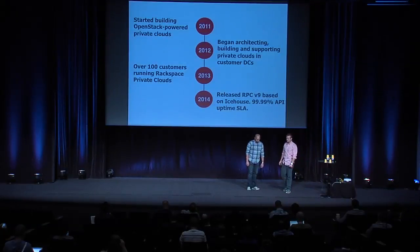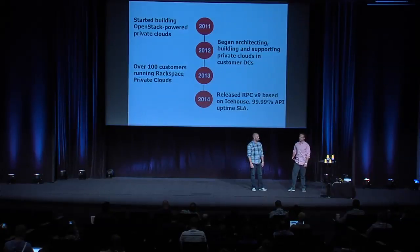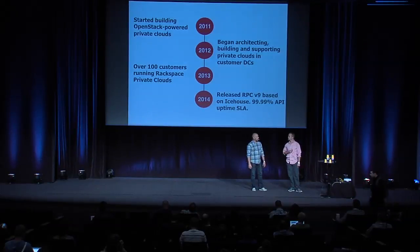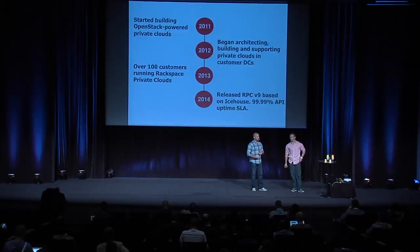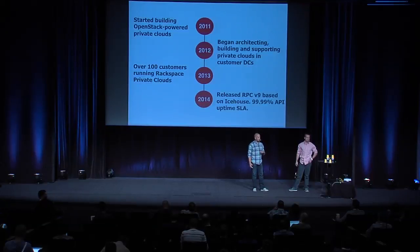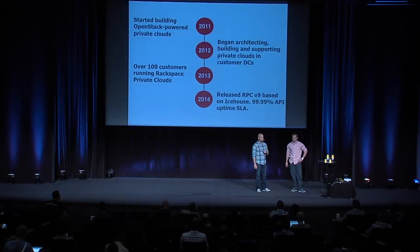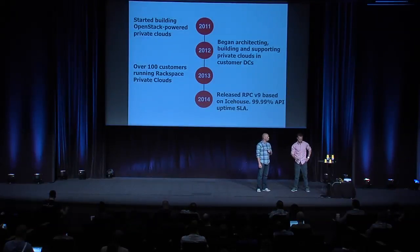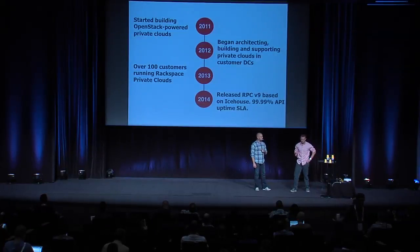Rackspace started building private clouds in 2011 using Nova Network. The first release was the Folsom release. We then began architecting and building private clouds in customer data centers, not just Rackspace DCs. In 2013, we experienced growth to over 100 customers with our Rackspace Private Clouds, and just recently released our V9 product based on Icehouse. The big takeaway is the 4.9 SLA uptime, so our main concern is stability, reliability, and uptime.